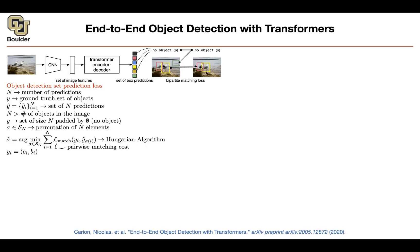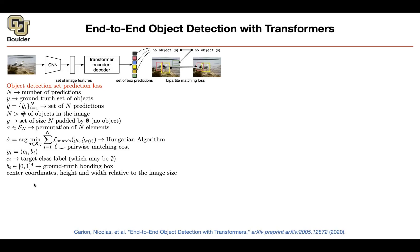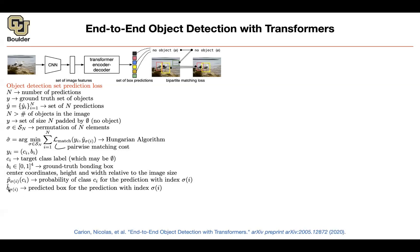Your ground truth for these boxes is going to have a corresponding class Ci and four coordinates bi. Ci could be empty or no object, which could include background or actually no objects. The bi are the box coordinates, which you normalize according to the size of your image so that you are always between 0 and 1 — predicting the height and width relative to the image size. The question is what is the corresponding probability for class Ci when you are using permutation sigma, mapping index i to another index sigma i.